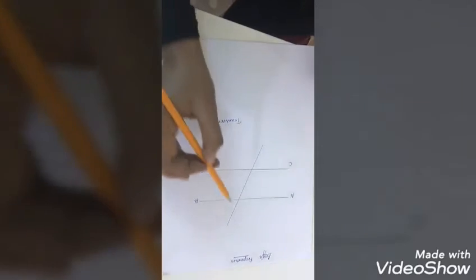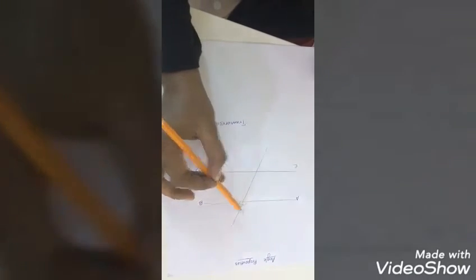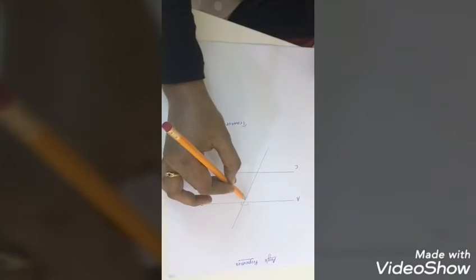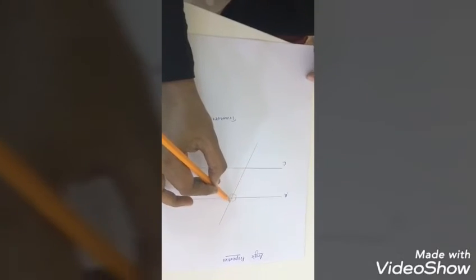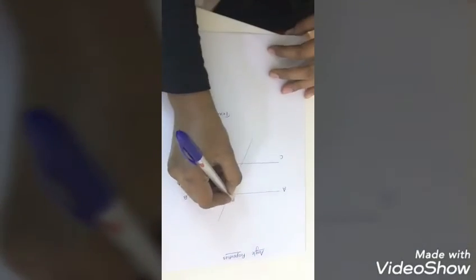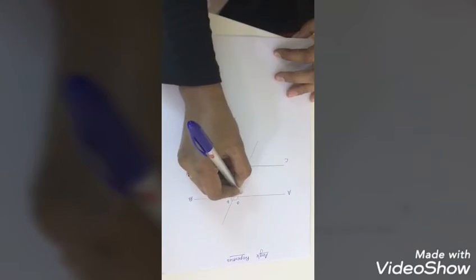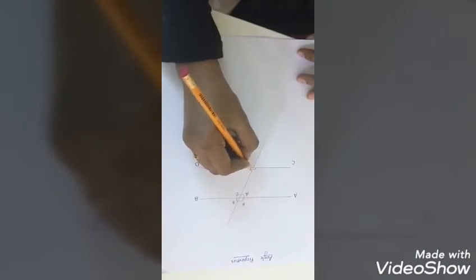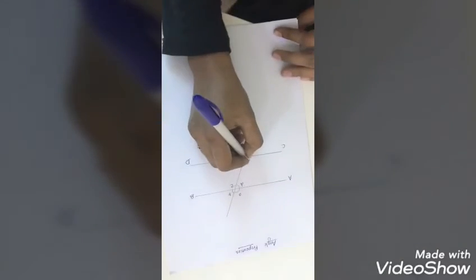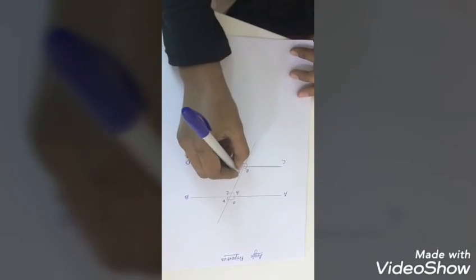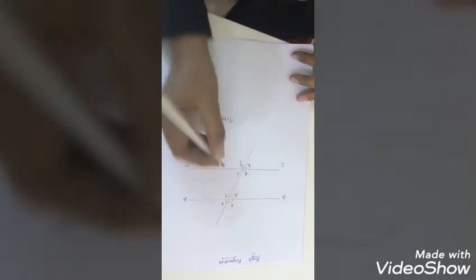So when it cuts the third line, when it cuts the two parallel lines, we get eight pairs of angles, right? Look at here. One, two, three, four. We can name this A, B, C, D. So here four angles and here we have four angles. Fine. Now we can name it E, F, G and H, okay?